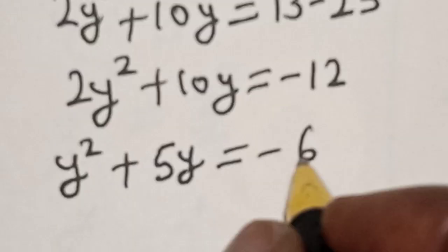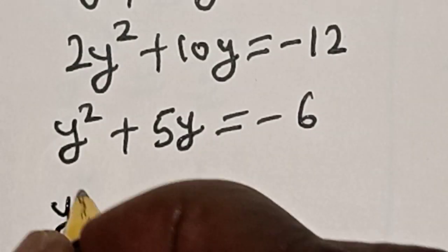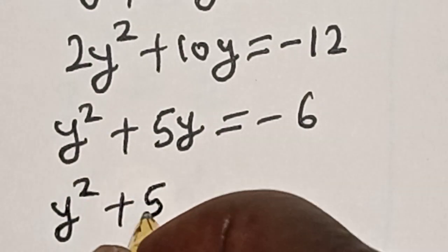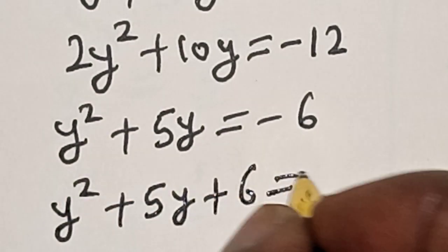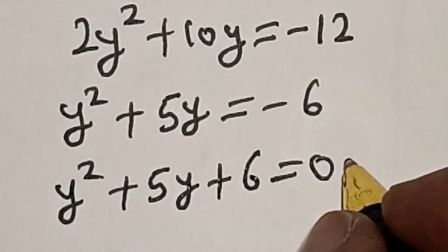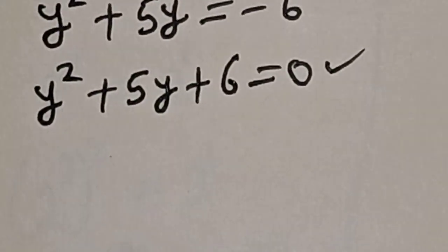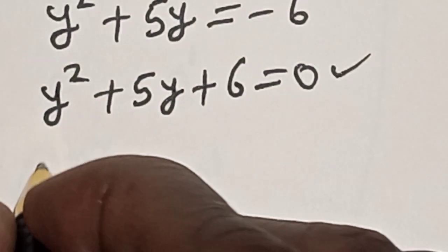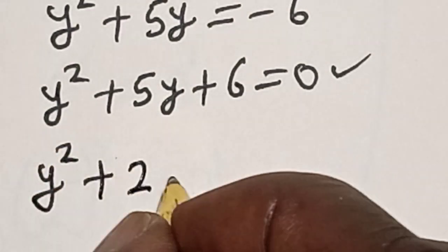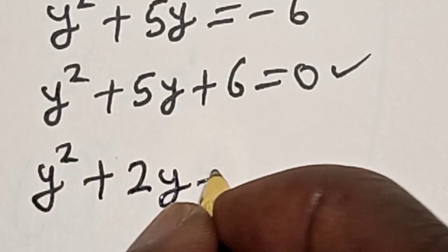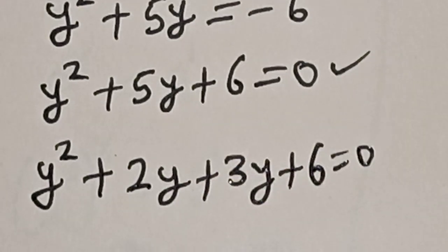So let's bring this minus 6 to the other side. We have y squared plus 5y plus 6 is equal to 0. This is a quadratic equation which can be solved using the factorization method. We have y squared plus 2y plus 3y plus 6 is equal to 0.